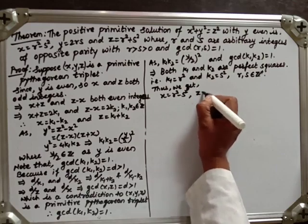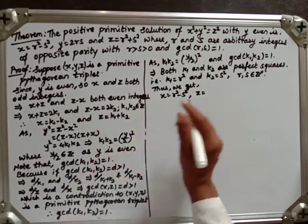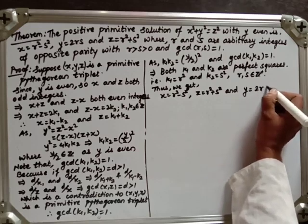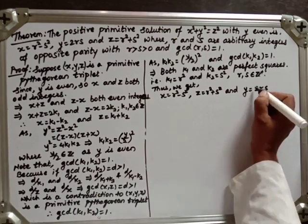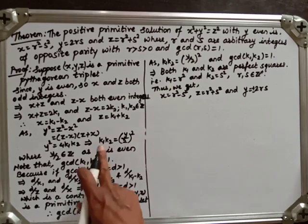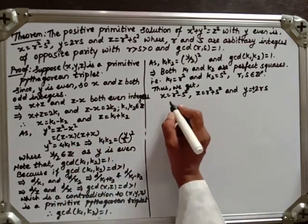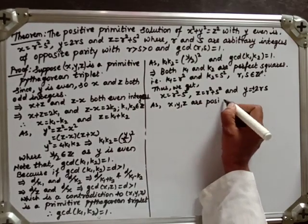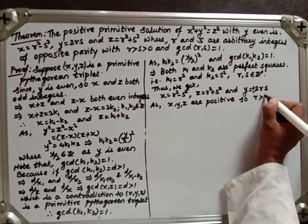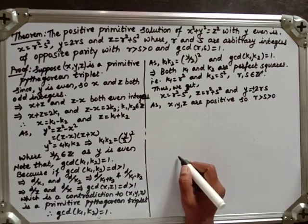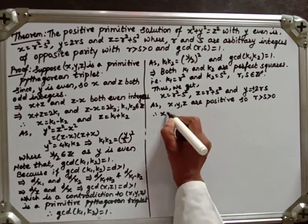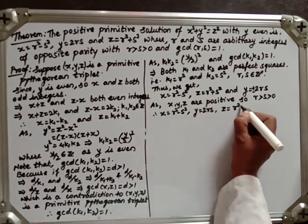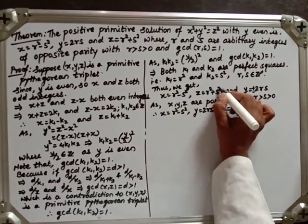And z equals r squared plus s squared. Putting in the values: y squared equals 4k1k2 equals 4r squared s squared, so y equals plus or minus 2rs. But since x, y, z are positive, r is greater than s and s is greater than 0, so y equals 2rs. Therefore x equals r squared minus s squared, y equals 2rs, and z equals r squared plus s squared.